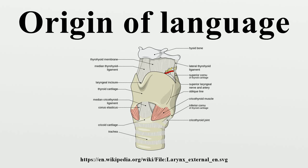Today, there are numerous hypotheses about how, why, when, and where language might have emerged. Despite this, there is scarcely more agreement today than a hundred years ago, when Charles Darwin's theory of evolution by natural selection provoked a rash of armchair speculations on the topic.